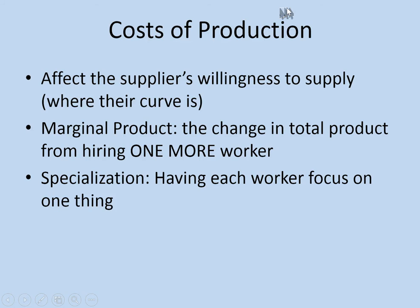Welcome everybody. Today we're going to talk about the costs of production. This is a pretty simple concept, actually. It helps to explain where supply comes from, or at least it explains why suppliers' supply curve is what it is. It has to do with those determinants — what makes a supplier willing to supply things at a certain price — and this essentially amounts to how much it costs to produce something at various output levels.